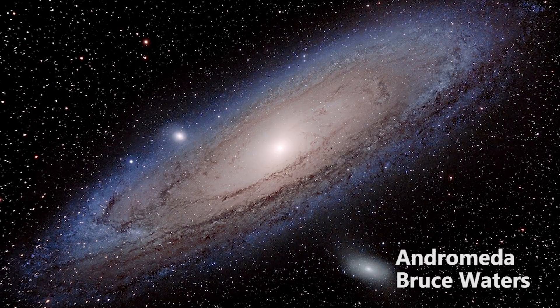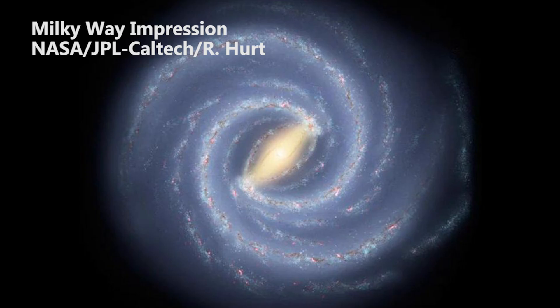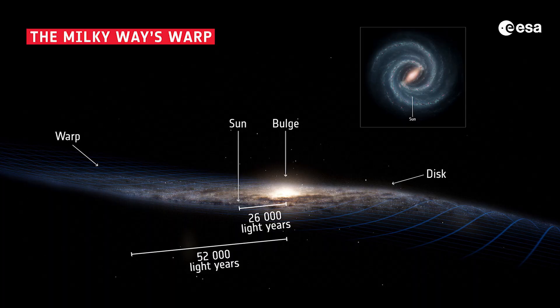Even within our local group, we have absolute beauties such as the Andromeda galaxy, the Triangulum galaxy, and of course the Milky Way, which we can't take third-person images of because we're inside it. But we can make really good impressions based on the best data we have, such as this one which was made by Stefan Payne-Vadenaar, JPL Caltech, and of course ESA, which has all these lovely extra annotations and labels on as well.